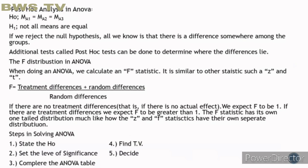Steps in solving ANOVA. First, you state your hypothesis. Second, you set the level of significance. Third, you complete the ANOVA table. Fourth, you find the tabular value. And fifth, you decide.